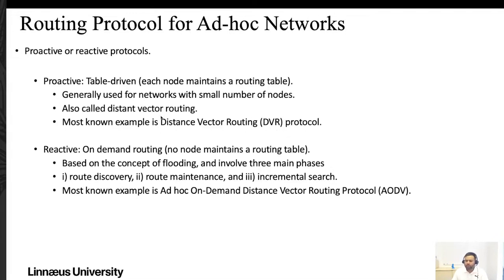One of the most famous examples of proactive table-driven routing is the Distance Vector Routing Protocol. Then we have reactive routing, also called on-demand routing — no node maintains a routing table. This concept is based on a flooding mechanism and involves three main phases: route discovery, route maintenance, and incremental search.